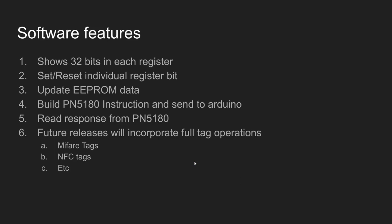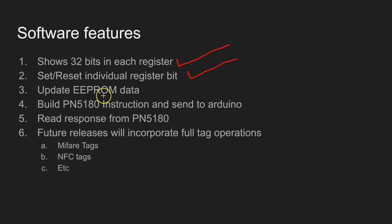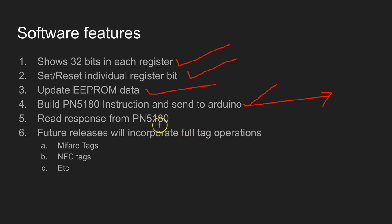These are some of the features of the software. You can see all 32 bits of every register in the board. You can set or reset individual register bits and write to the board. You can update the EEPROM data and view it as well. You can build PN5180 instructions and send them to Arduino, and eventually from the Arduino it will go to the PN5180 board. Any response from the PN5180 board is displayed on the screen.